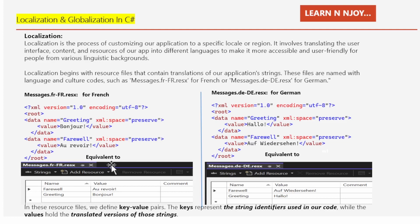The equivalent in Visual Studio shows a user interface where we can simply enter the name and value and it will create the XML file automatically. Whenever we add a .resx file, we are defining key-value pairs — the key represents the string identifier used in our code, while the value holds the translated version of those strings.